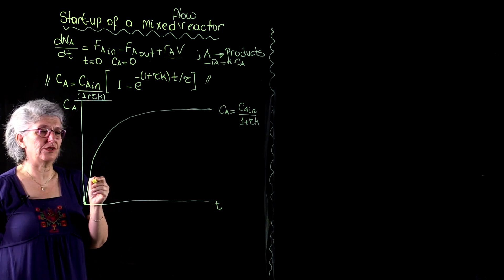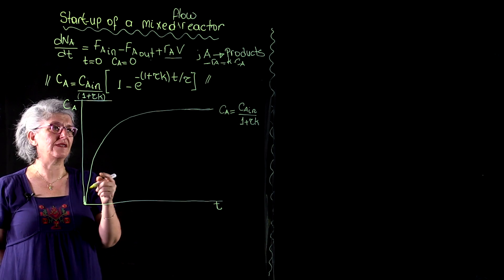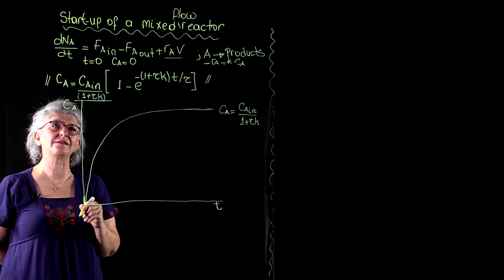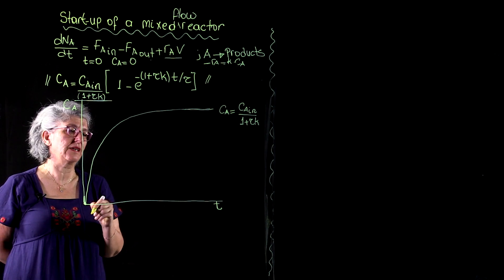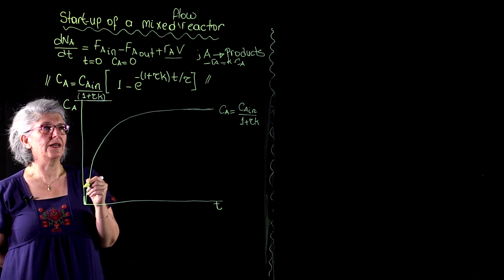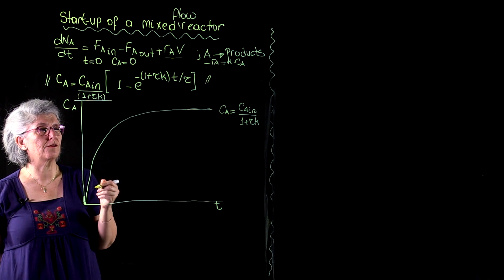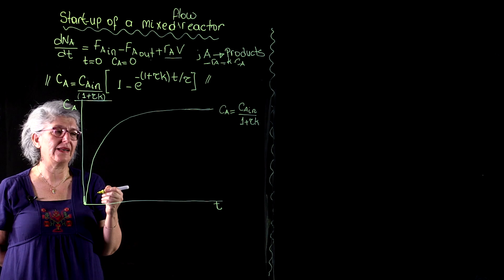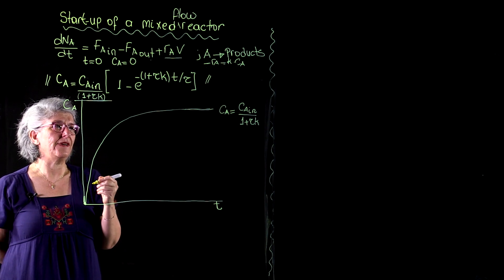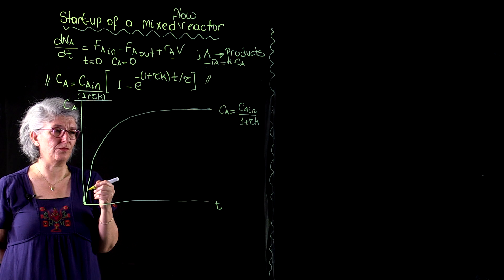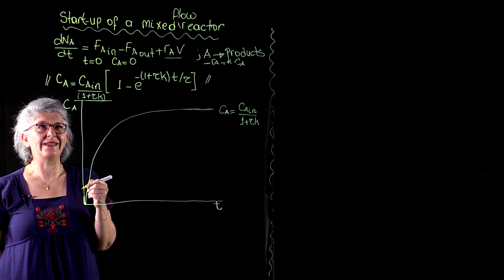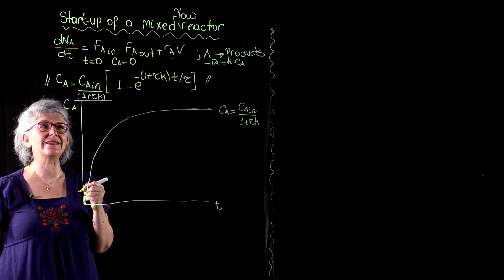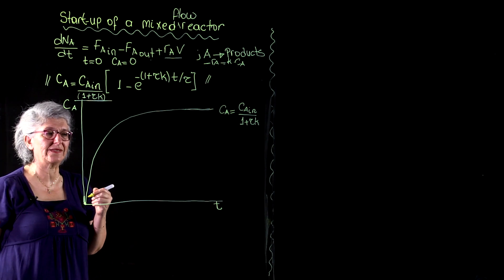Now, let's come back to the universality of this curve. The curve is qualitatively universal, but quantitatively, it is going to be different for each Tau, for each K, for each CA in. Now, if we normalize these terms and have dimensionless quantities, and this is the merit of dimensionless quantities, that its predictions are going to be universal.